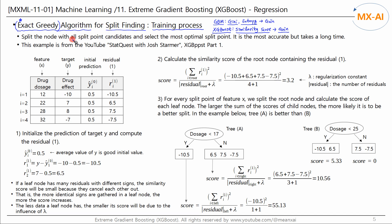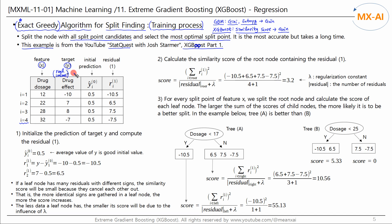The exact greedy algorithm splits a node using all split-point candidates and selects the best split among them. Let's take a look at the training process through a simple example. The source of this example is the XGBoost Part 1 video from YouTube StatQuest. This data has one feature X and one target Y, with 4 data points. Since the target Y values are all real numbers, this is a regression problem.